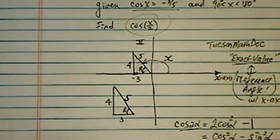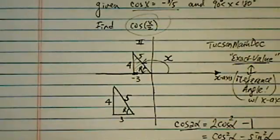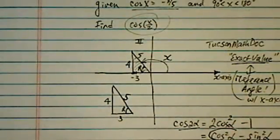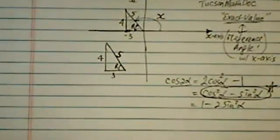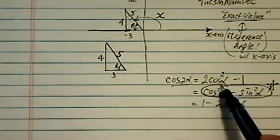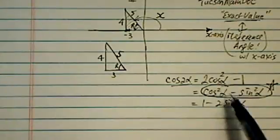It's also equal to 1 minus twice sine of alpha. What you really need to remember is this one. And from there, you can pretty much derive everything else. Since we were given cosine alpha, I'm going to use that one instead.